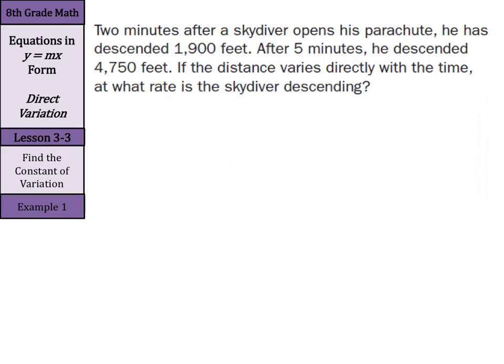Let's look at our first example. Two minutes after a skydiver opens his parachute, he has descended 1,900 feet. After five minutes, he descended 4,750 feet. If the distance varies directly with the time, at what rate is the skydiver descending?